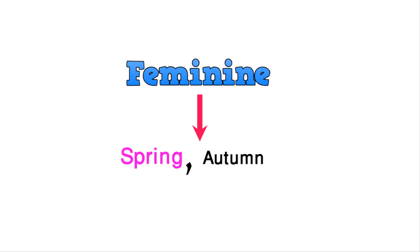Spring and autumn seasons represent good, normal weather — they don't have extreme cold or heat. Because they represent pleasant, normal weather, we put spring and autumn in the feminine gender category.